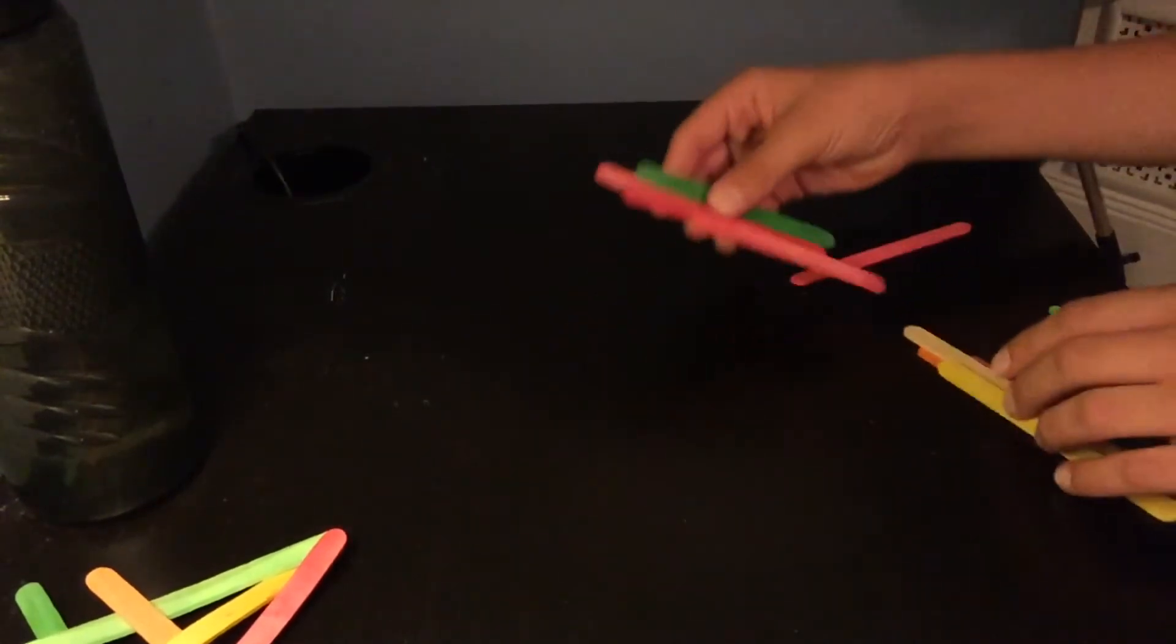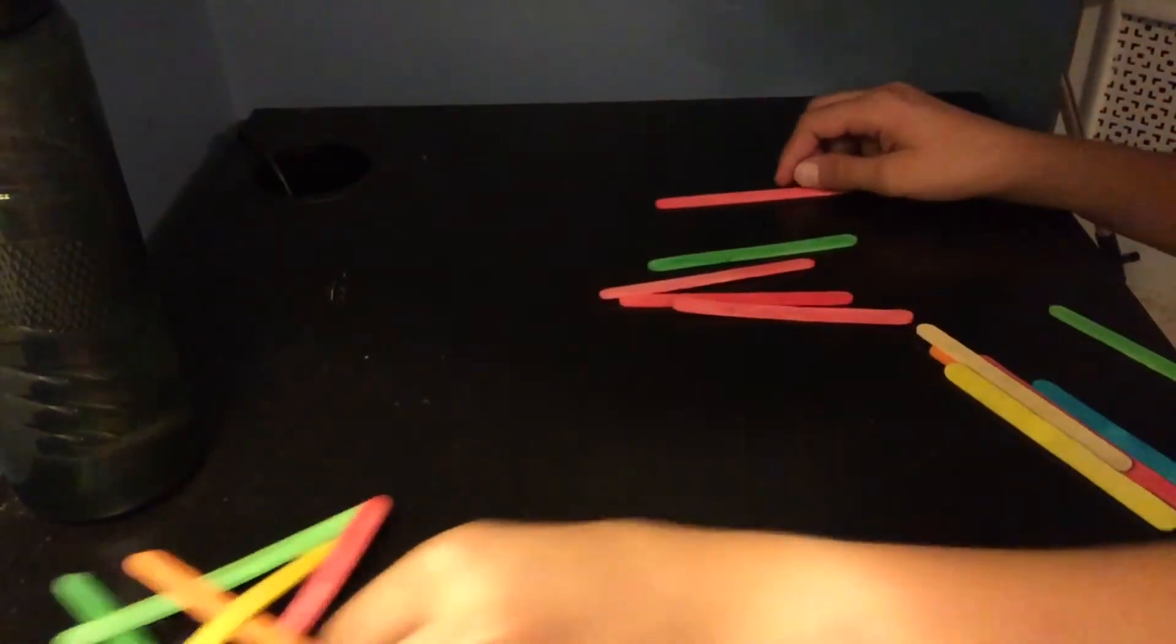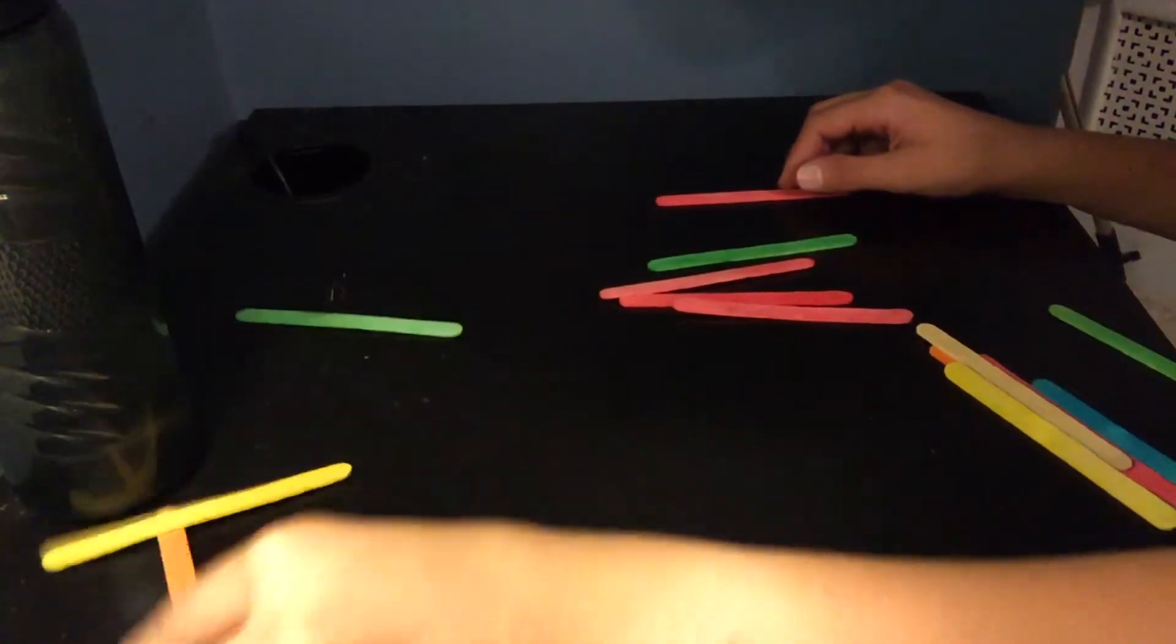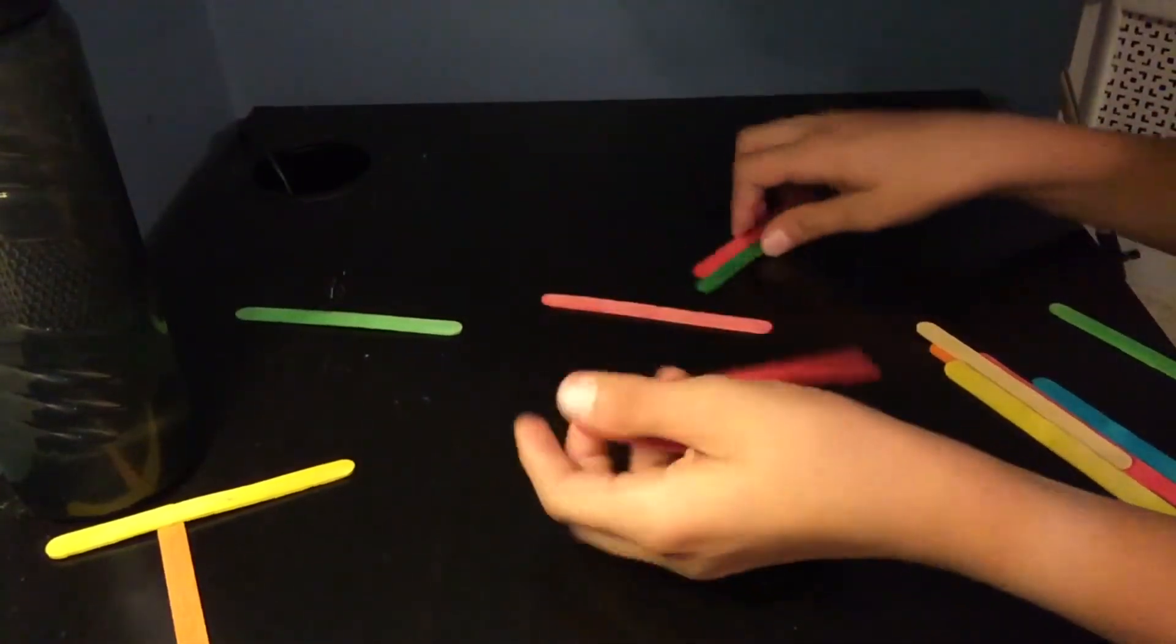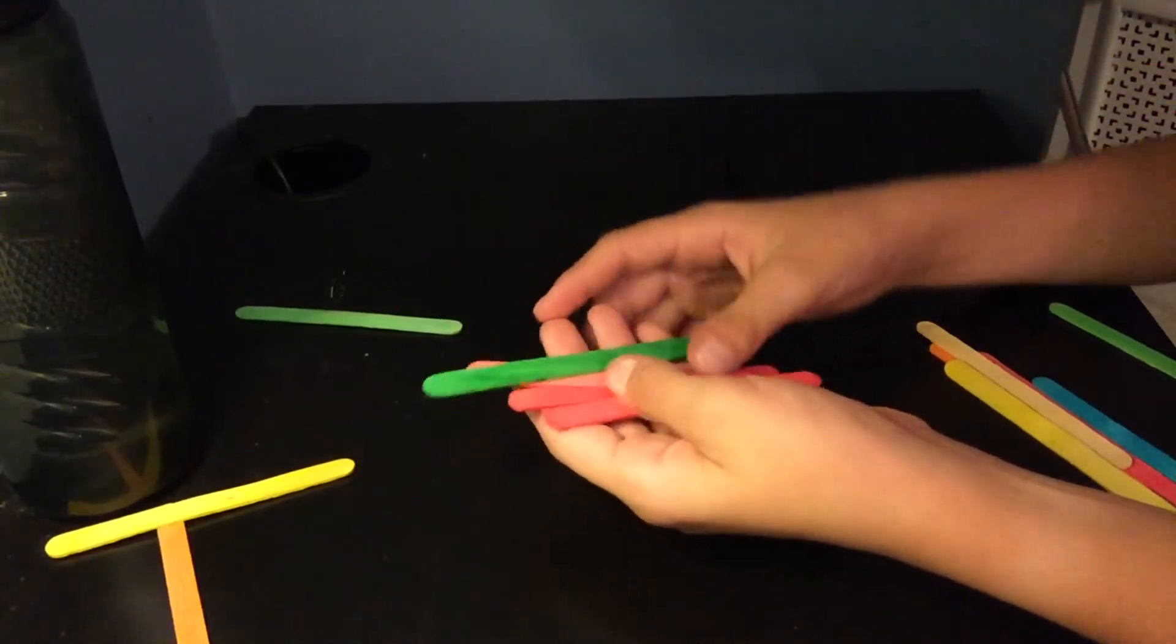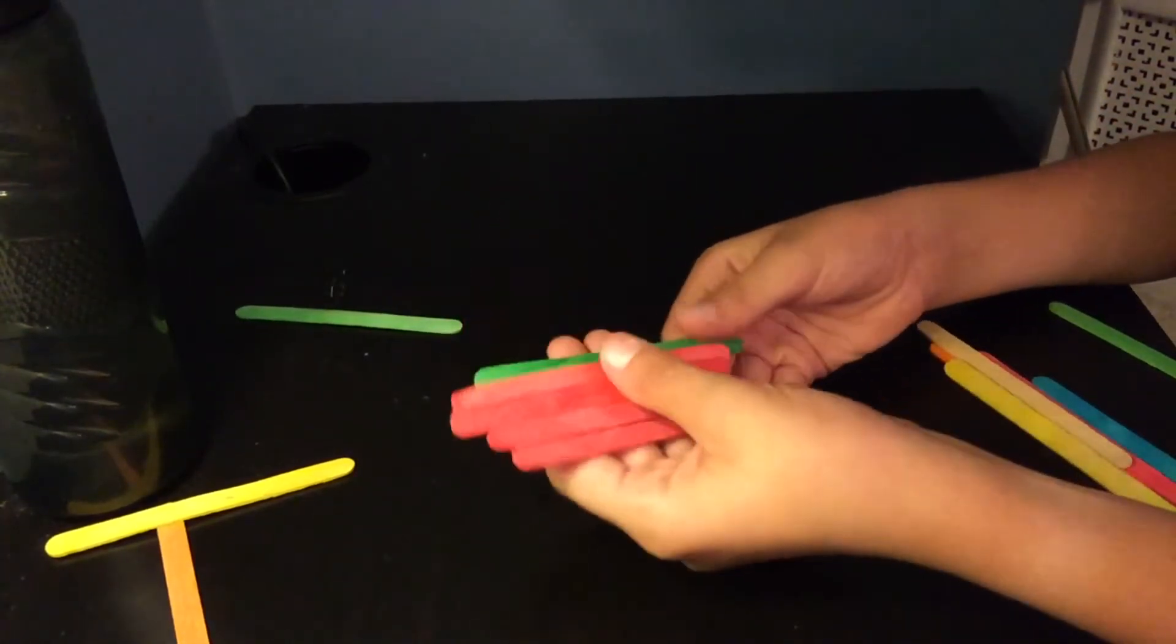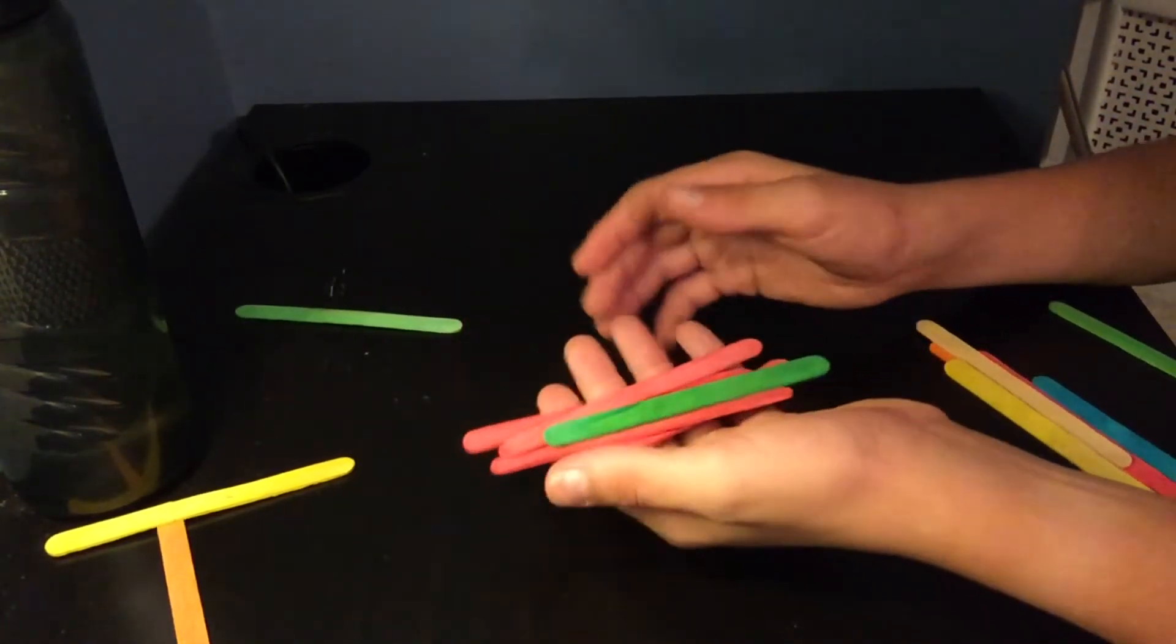We have two designs today. The first design will be this one. It breaks on impact and requires five popsicle sticks. They all have to be the same length, but it doesn't matter what kind of popsicle sticks you use.